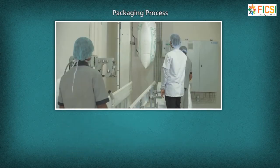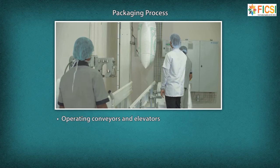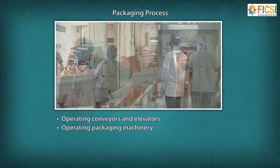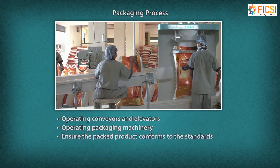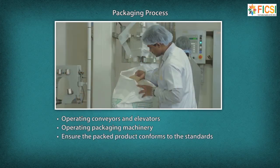Packaging Process: A grain mill operator performs the following tasks during packaging: operating conveyors and elevators to transfer processed grain to the packing machine, operating packaging machinery by setting the batch code, date coding, filling quantity, and assessing the weight of the packaged product to ensure conformance to standards.